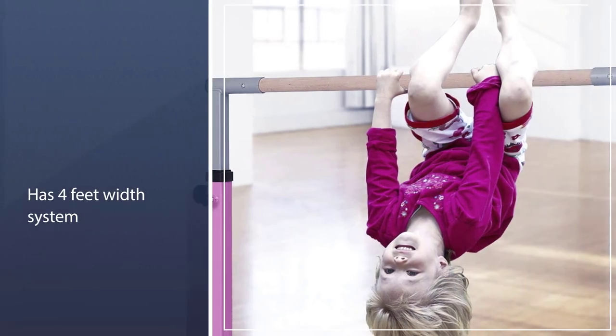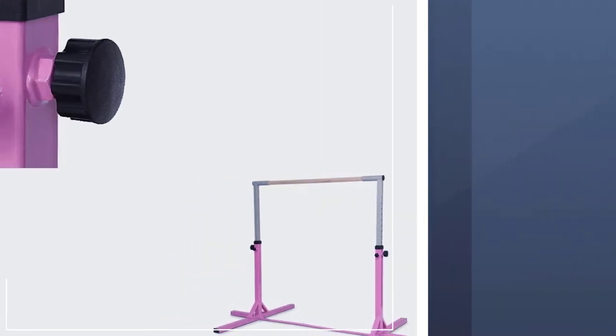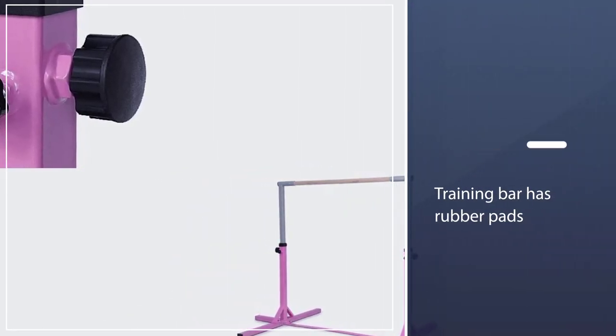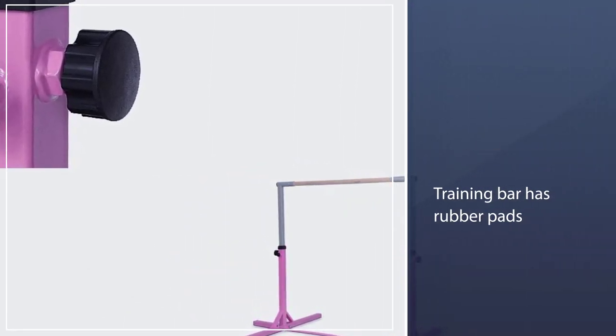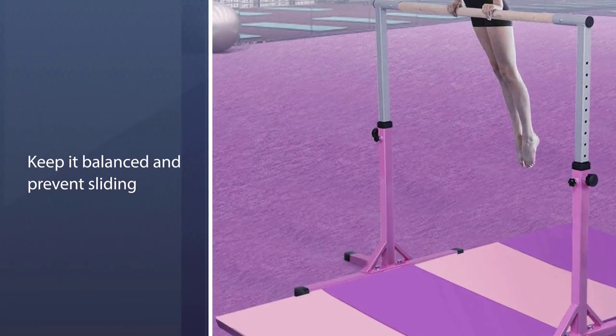The training bar has rubber pads that keep it balanced and prevent sliding. The bar is made of highly dense and intense material that is environmentally friendly with EPE foam. This bar is strong and resilient enough and trains the users to do all the exercises well.